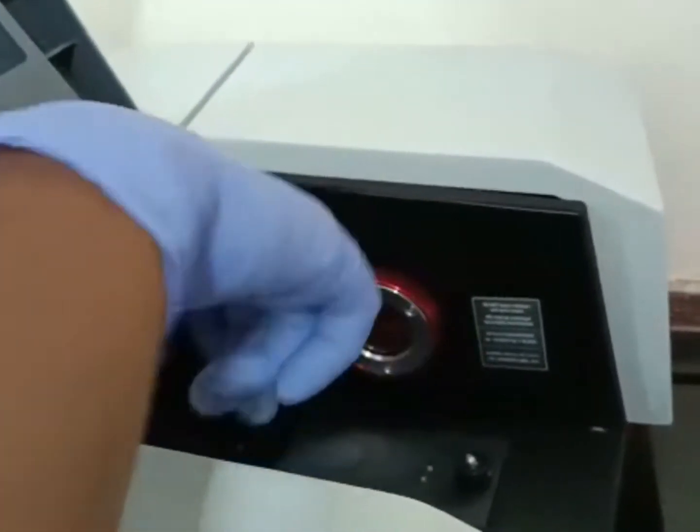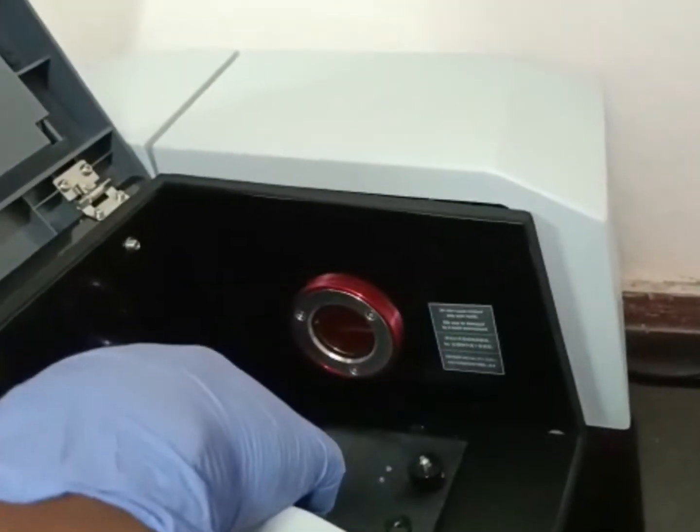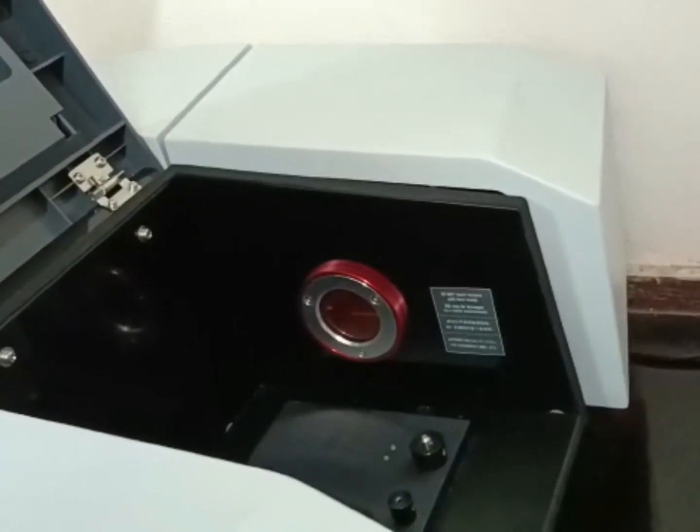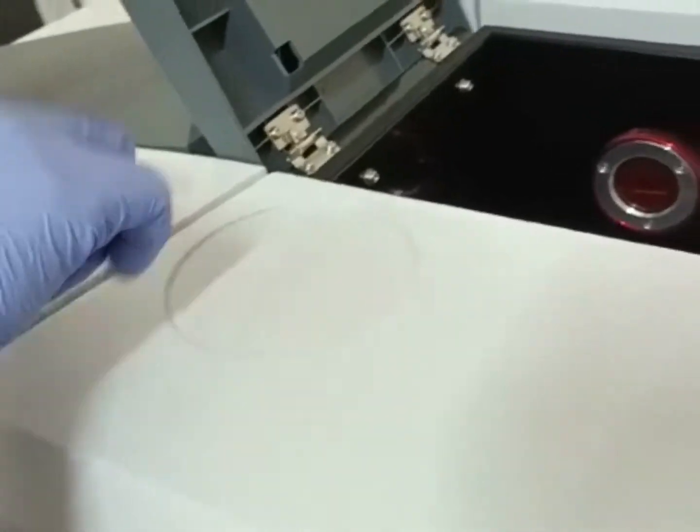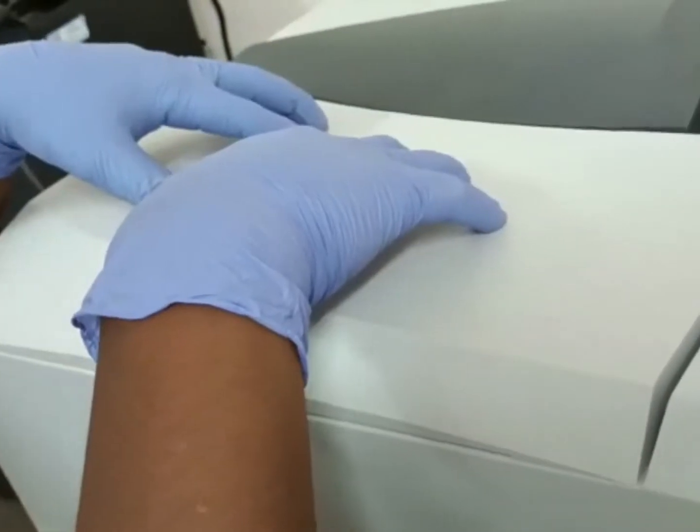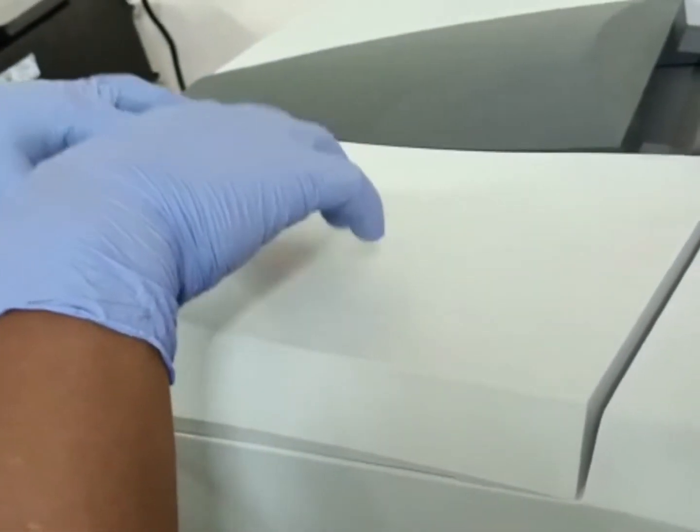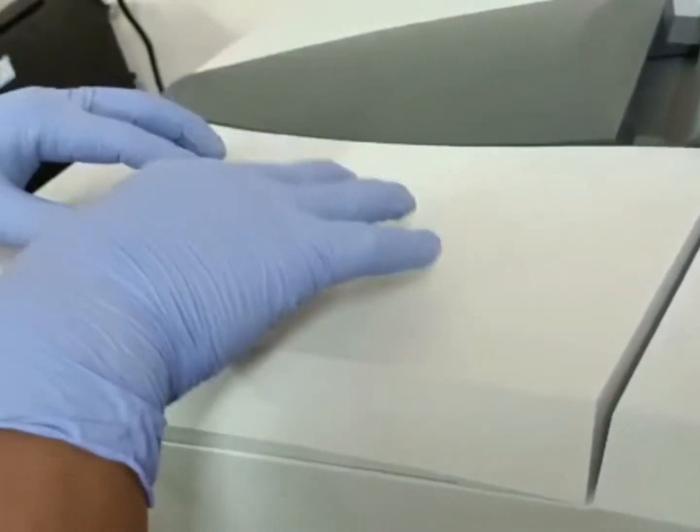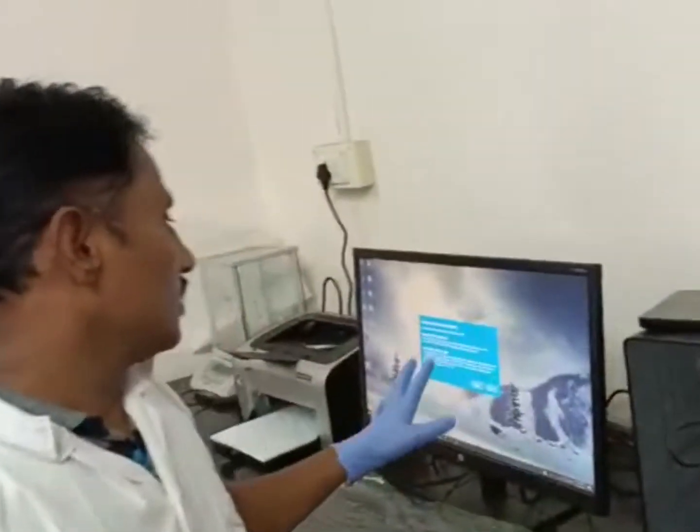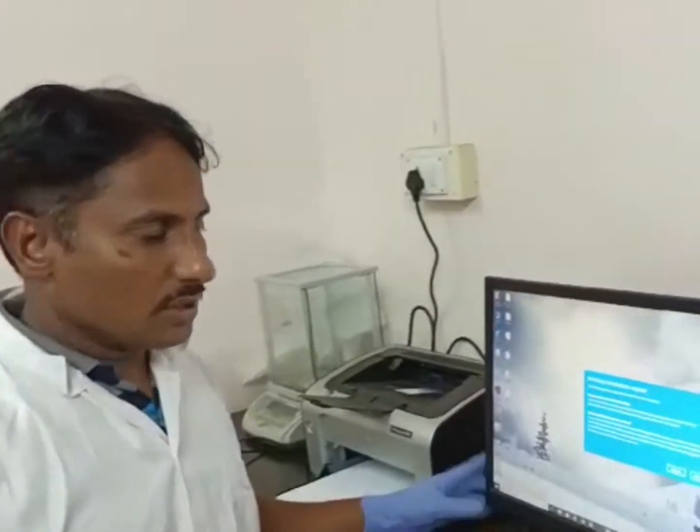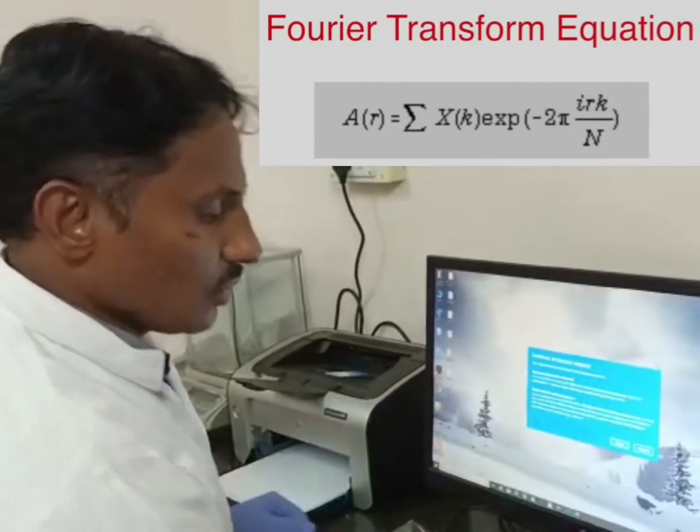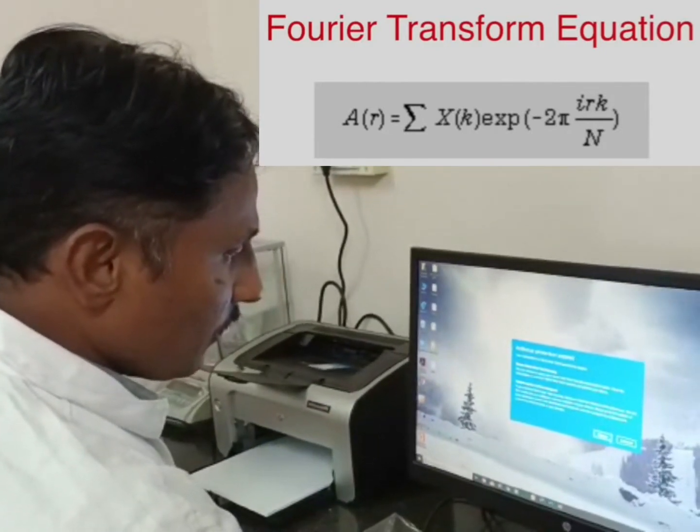This is the IR source. After that we fix the ATR machine before the detector, and this is the position of the detector where the amount of absorbed or transmitted light by the molecule gets measured. Here, constructive and destructive interference of light waves convert into amplitude.